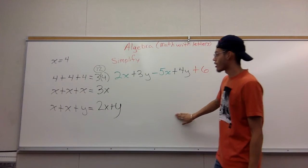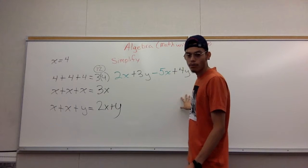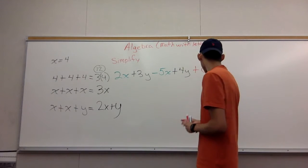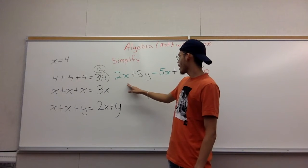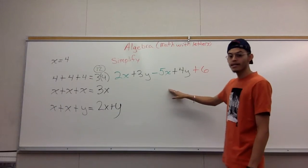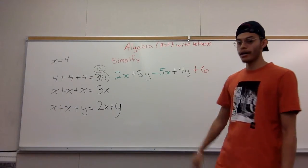Okay, now for this longer problem, but it's pretty simple to figure out. You have 2x plus 3y minus 5x plus 4y plus 6.